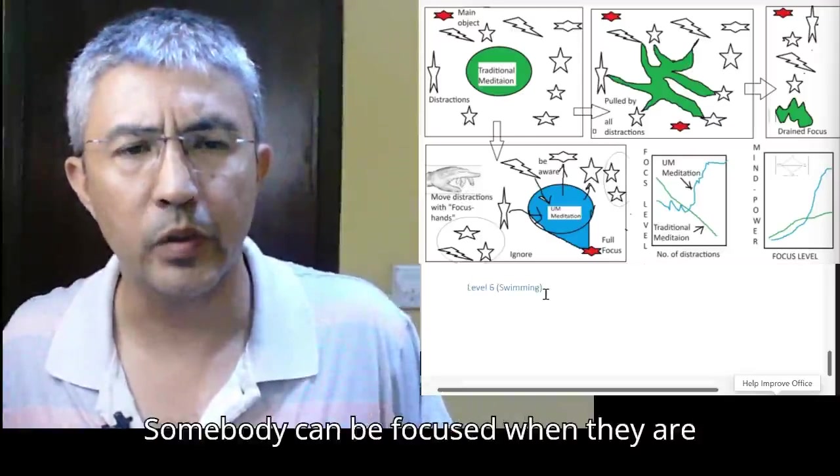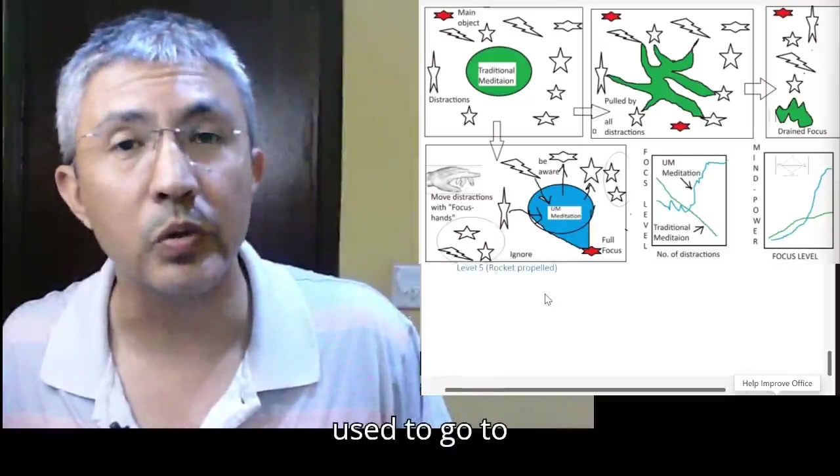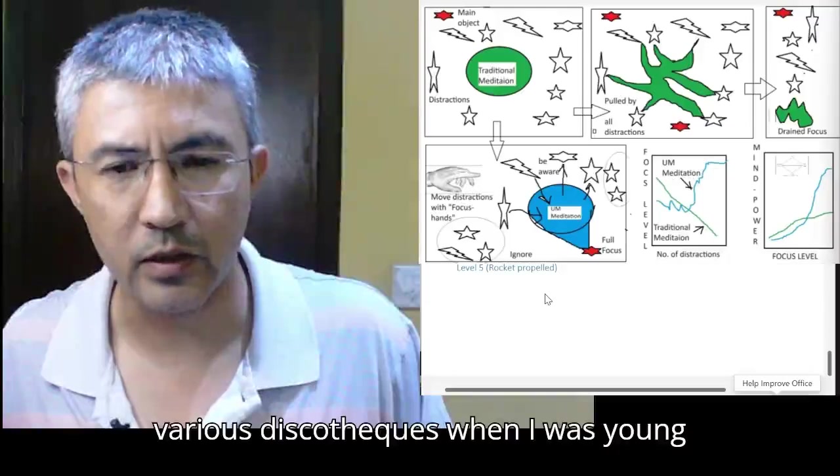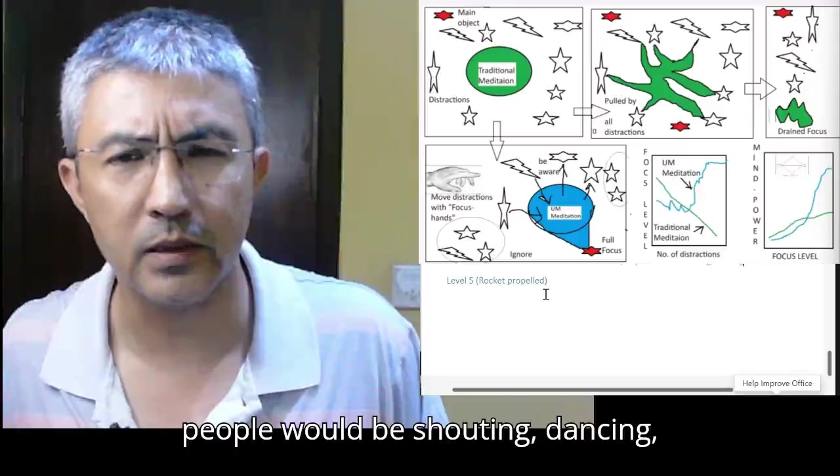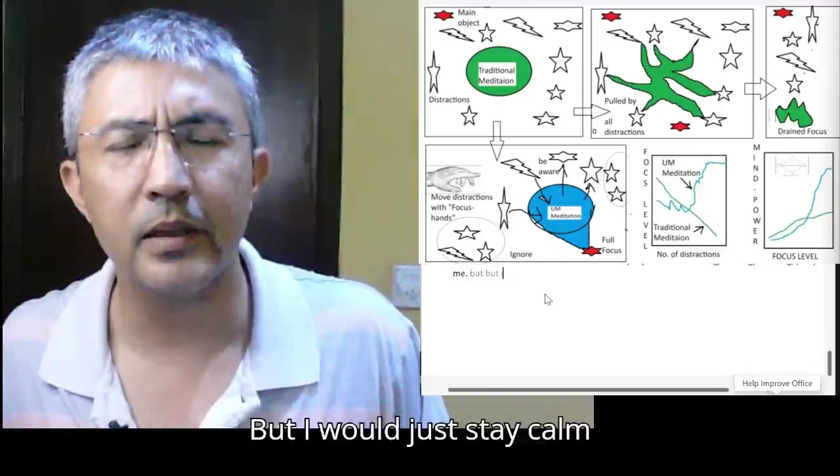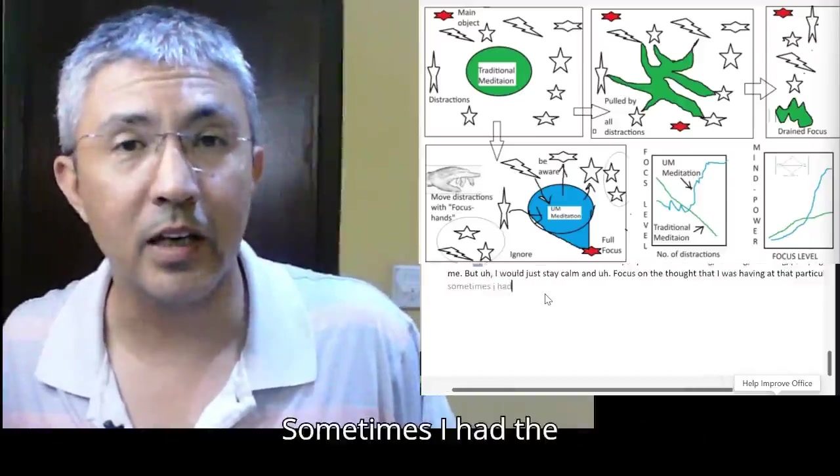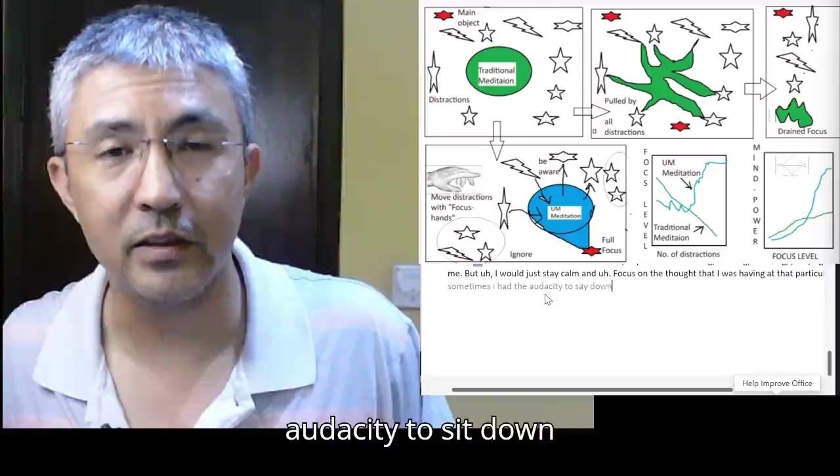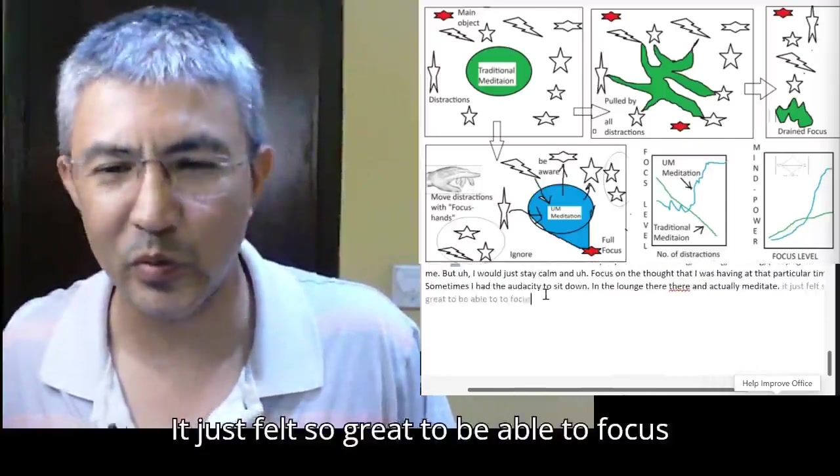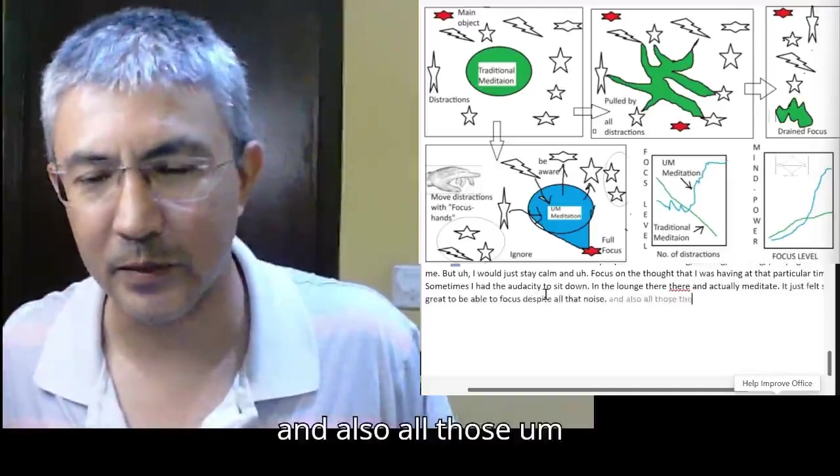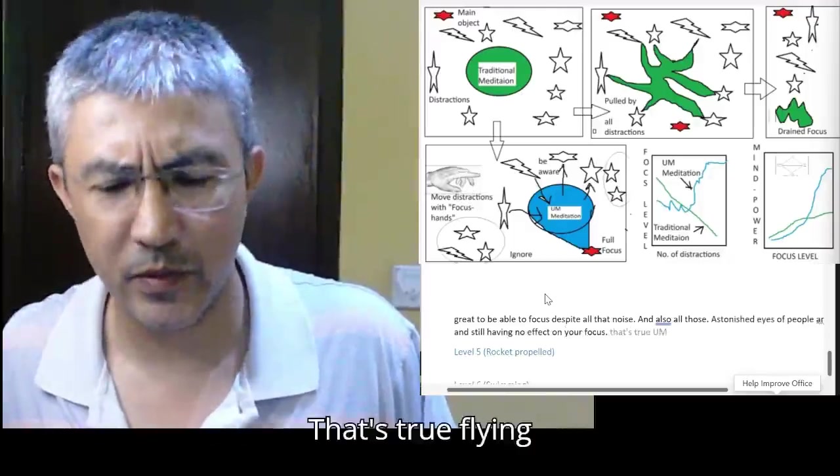So at the level four, somebody can be focused when they are even physically disrupted. I like this level a lot. I used to go to various discotheques when I was young and I used to practice this level of focus. So there would be so much noise and people would be shouting, dancing, shouting, partying around me. But I would just stay calm and focus on the thought that I was having at that particular time. Sometimes I had the audacity to sit down in a lounge chair and actually meditate. It just felt so great to be able to focus despite all that noise and all those astonished eyes of people on you and still having no effect on your focus. That's true flying focus level.